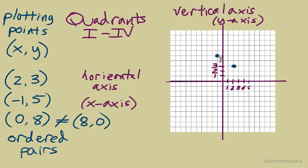To identify a point, we always start at the origin — the center of the coordinate plane — and move horizontally first, then vertically second. For example, a point up here: from the origin, we go left 1 unit horizontally, giving us negative 1, and then up 5 units vertically, giving us positive 5 on the vertical axis. So this point represents the ordered pair (-1, 5). The first number is our horizontal movement, and the second is our vertical movement.